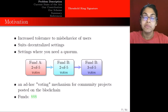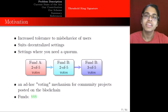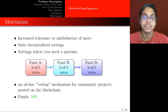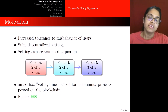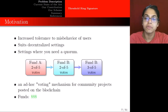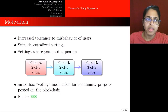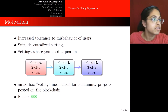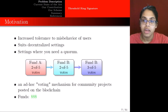Why might we be interested in Threshold Ring Signatures? With thresholds there's an increased tolerance to misbehavior of users. This suits decentralized settings because maybe somebody wants to go offline for a while but you still want to get the quorum. As an example, suppose there is an ad hoc voting mechanism for community projects posted on the blockchain. Three out of five people voted and say they want to fund Project B. What's on the blockchain is public, so it's known that three people want to fund Project B, but it's not known which particular members want to do this.